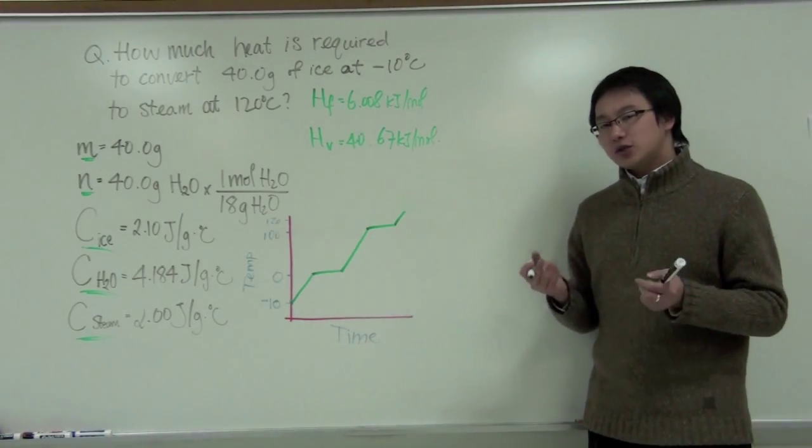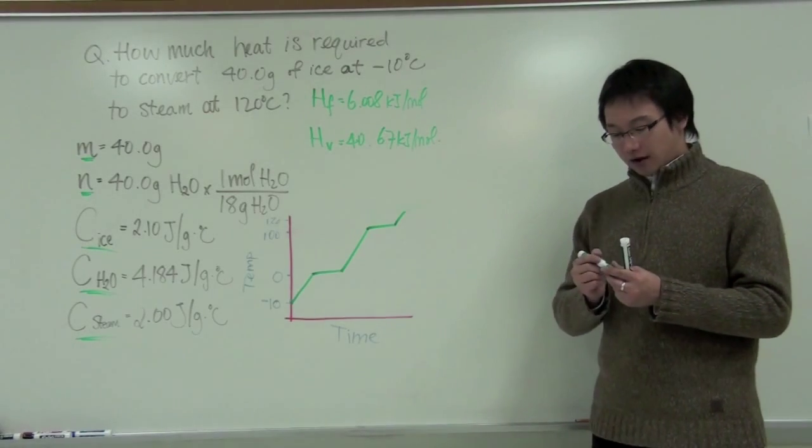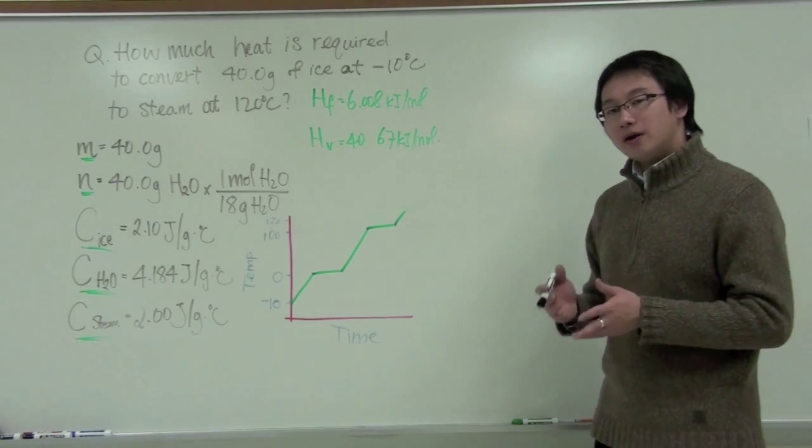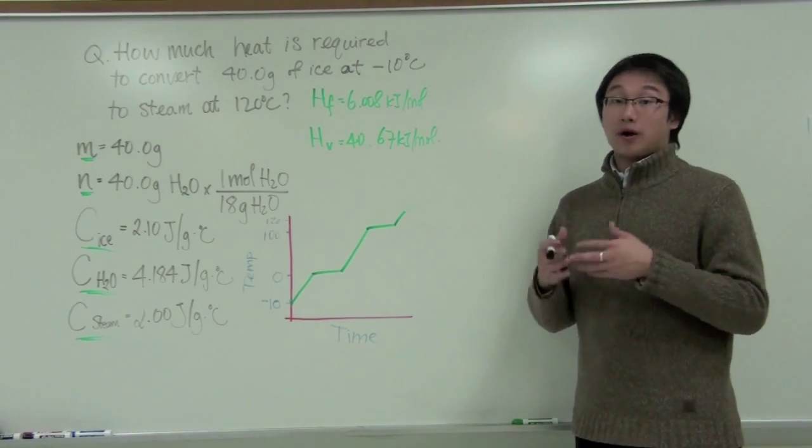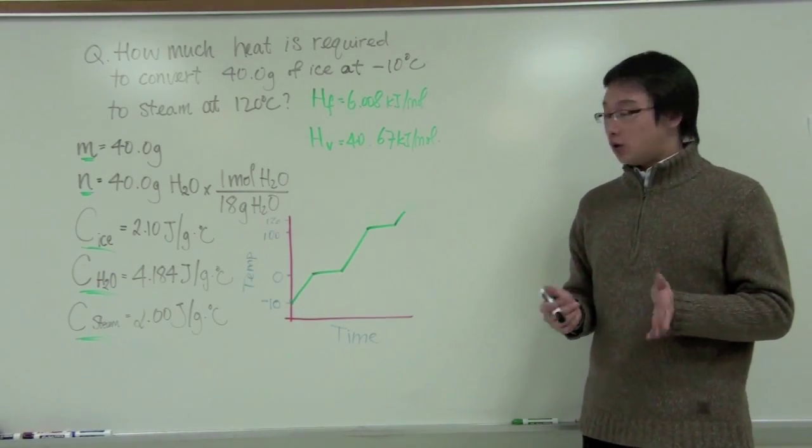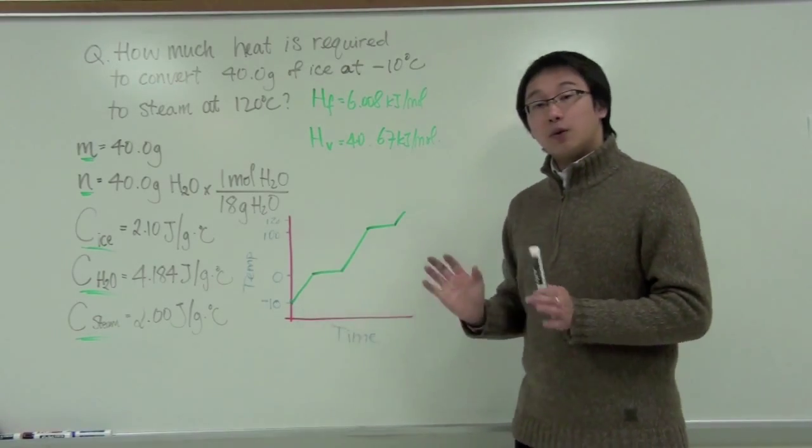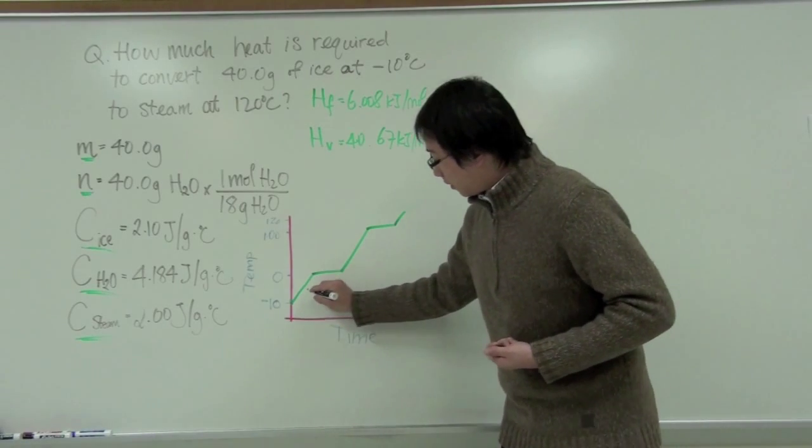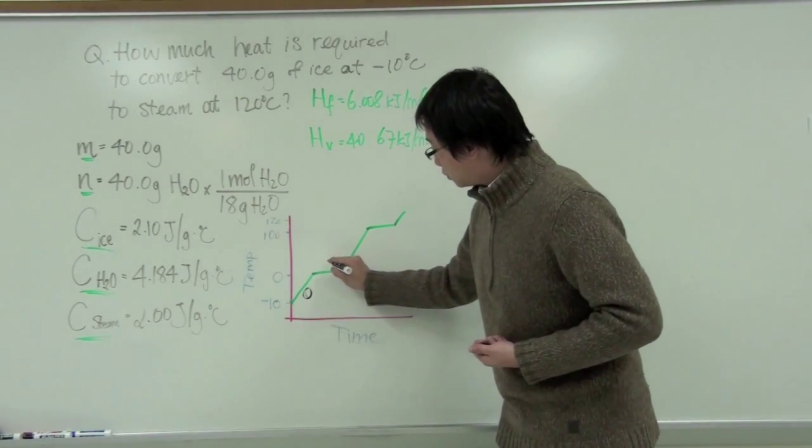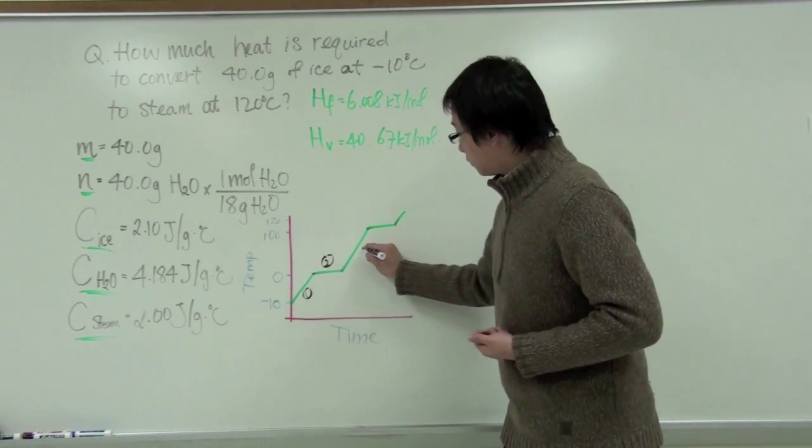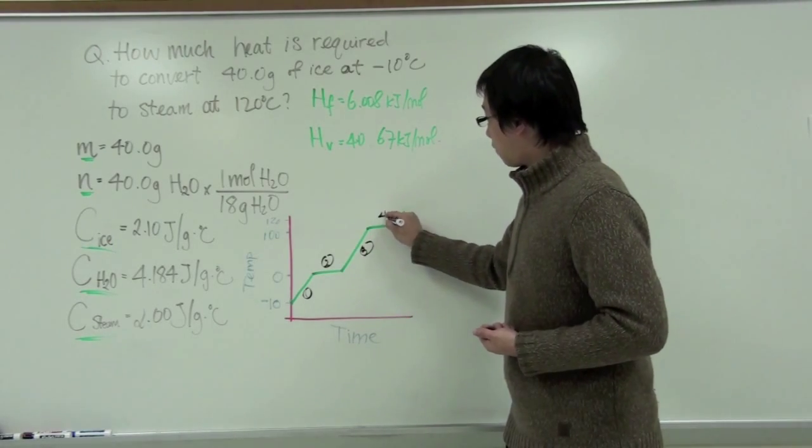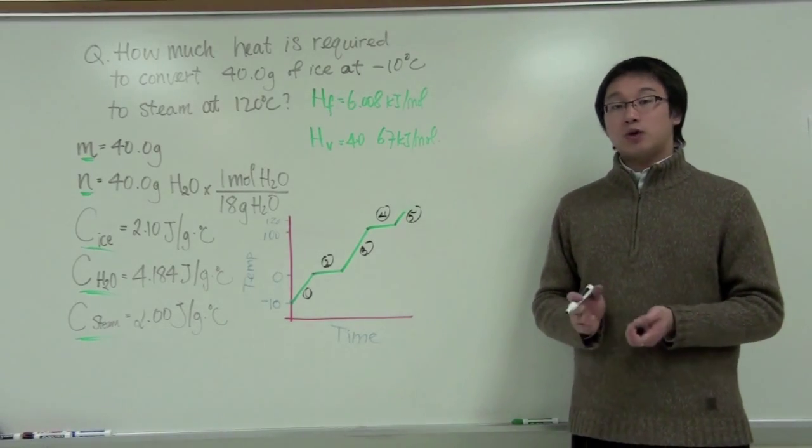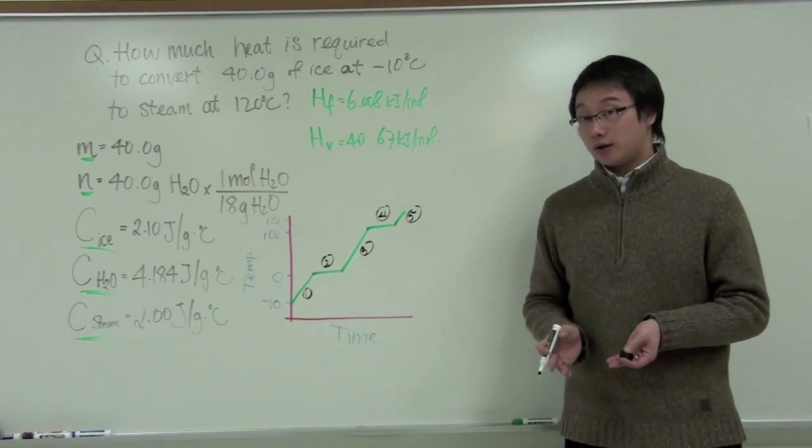So why is it so important for us to draw this graph? Well, if you draw this graph, it helps you to visualize how many different segments or calculations that we have to do. For each segment, it represents an equation, it represents a calculation. So we have one, two, three, four, five. We have a total of five segments, that means we have to do a total of five calculations.